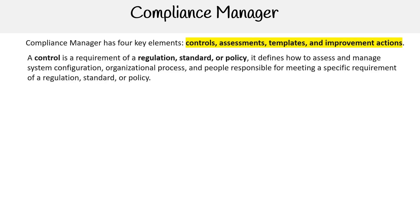The first is control. A control is a requirement of a regulation, standard, or policy. It defines how to access and manage system configuration, organizational process, and people responsible for meeting a specific requirement of a regulation, standard, or policy.